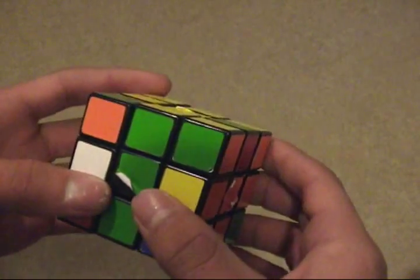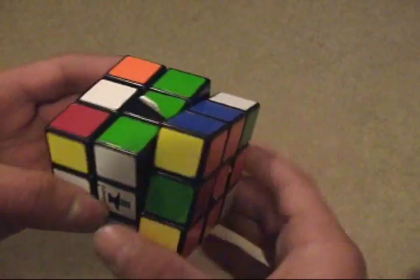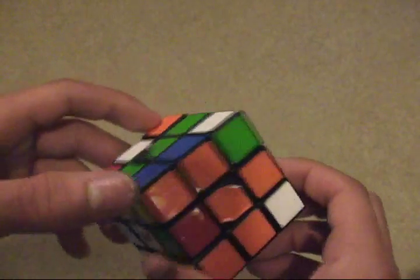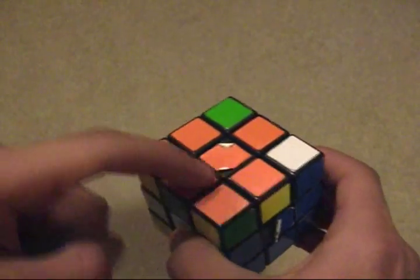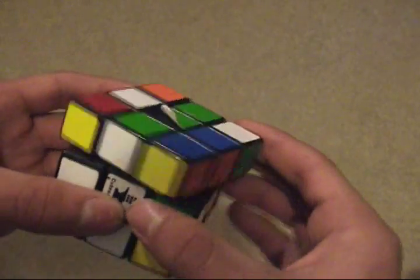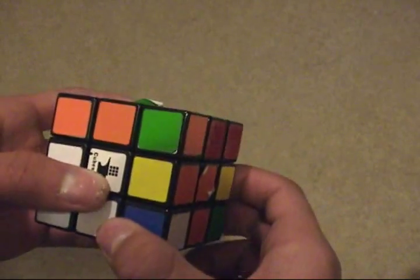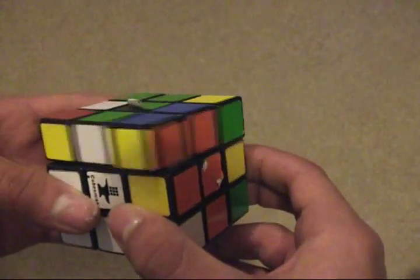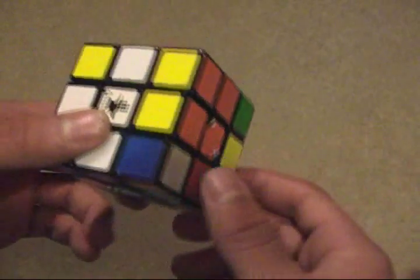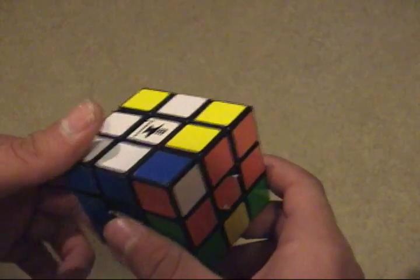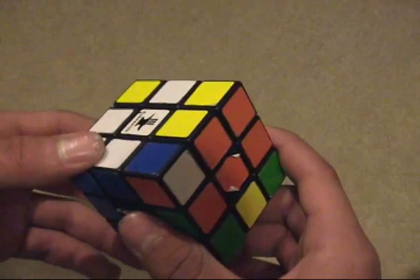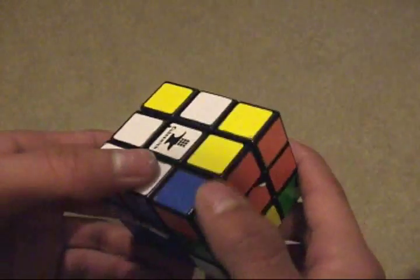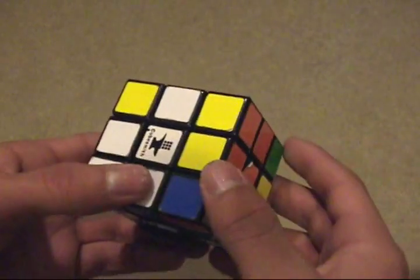To do that, I'm going to move the pair up to the U layer, move it out of the way, and move this edge right here. When I put this back to the R layer, they've joined together. Now I'm looking for the next pair to fill in these last two pieces and finish the first two layers.